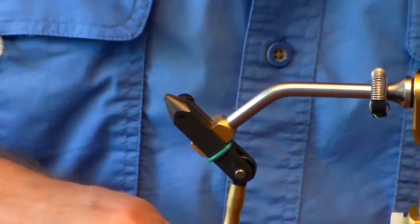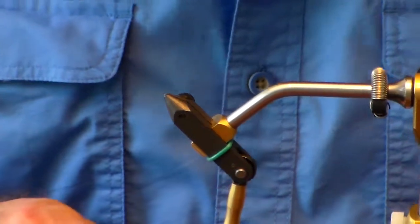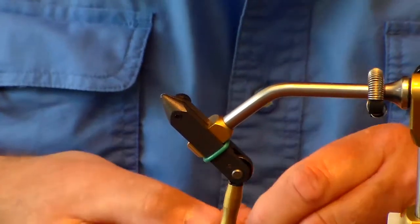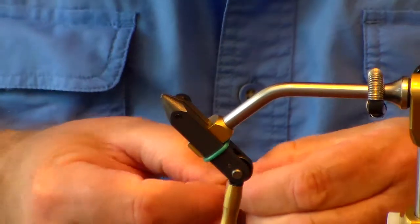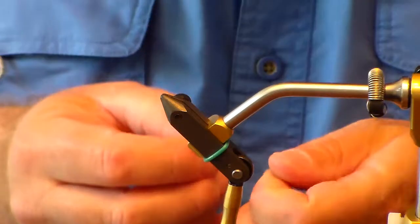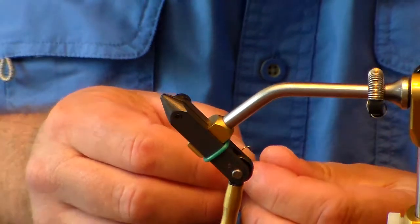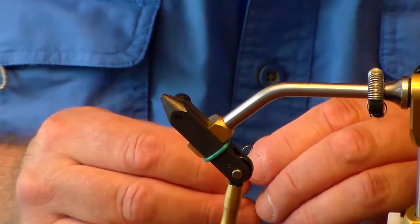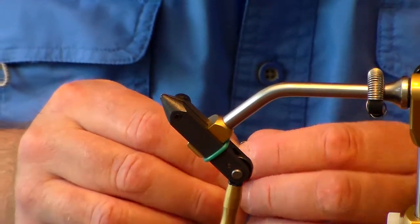To get started, we'll take a No. 14 hook and put our bead on it. Make sure you put the small end of the bead on the hook first. It's very important. If you're not using a barbless hook, now would be a good time to mash the barb.